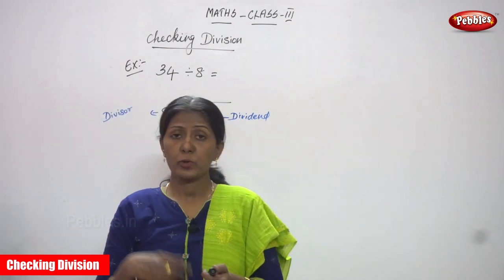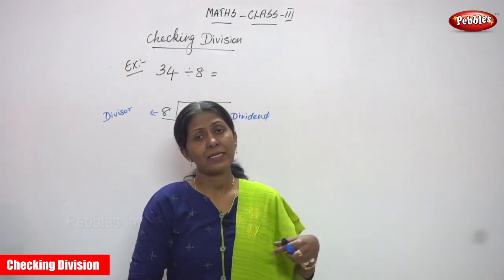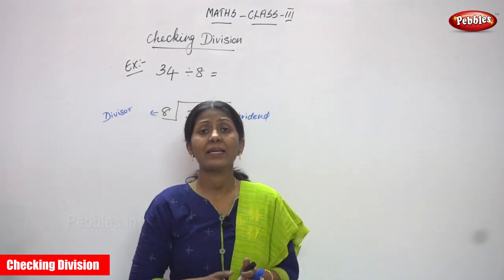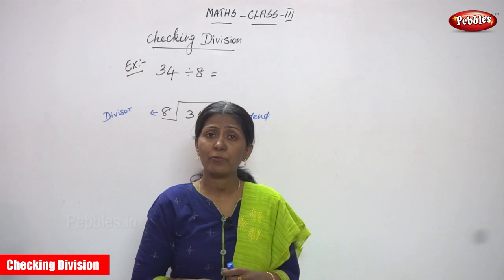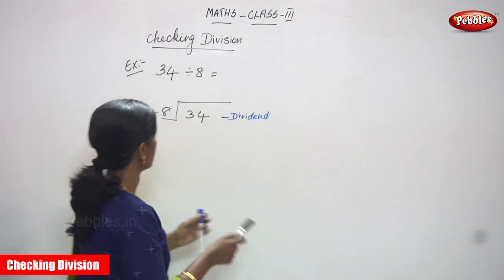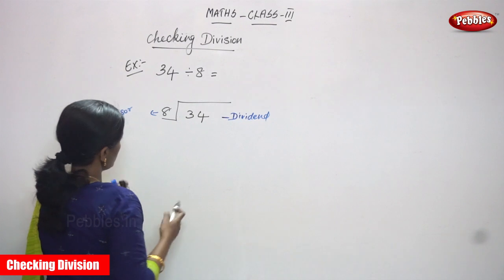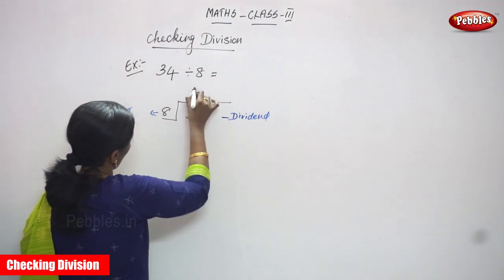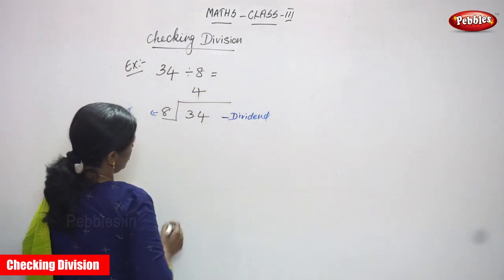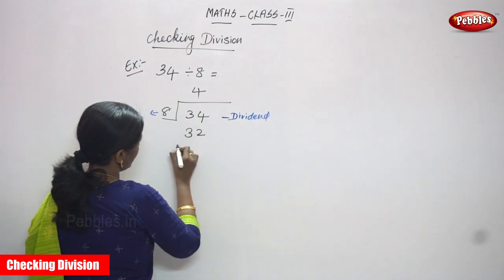So you must say the 8 times table up to the nearest value of 34. So: 8 ones are 8, 8 twos are 16, 8 threes are 24, 8 fours are 32. So the nearest number you can get is 32 — that's 8 fours. Nearest value, you got it.